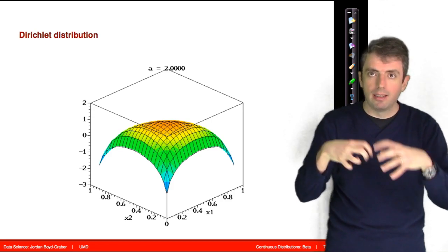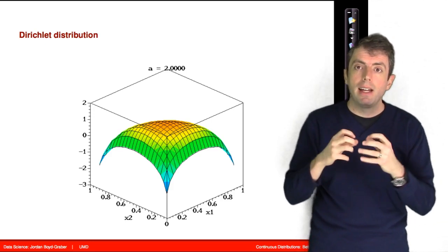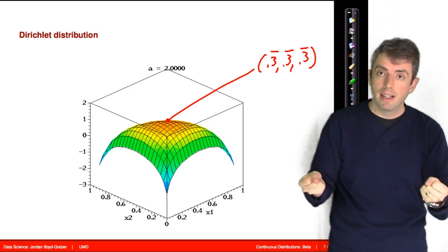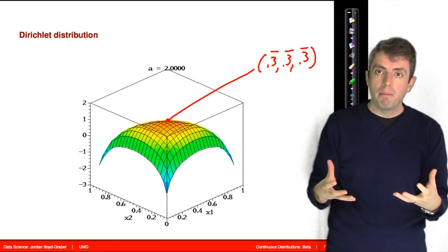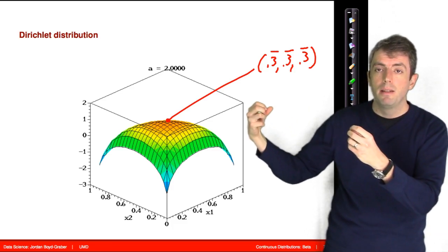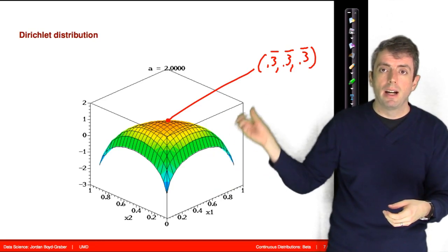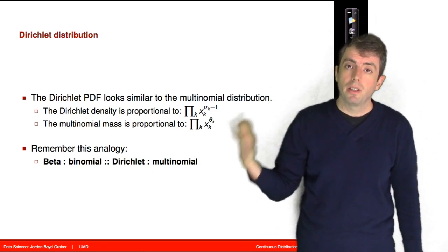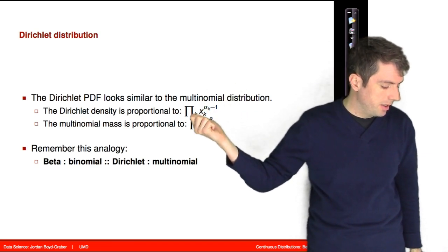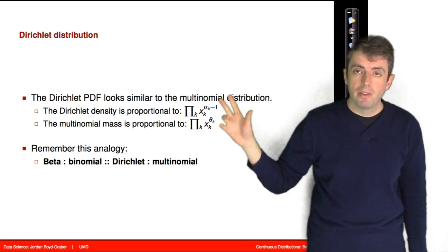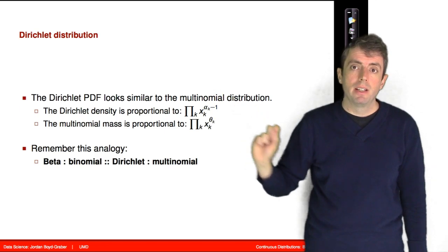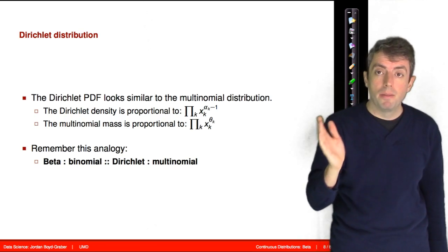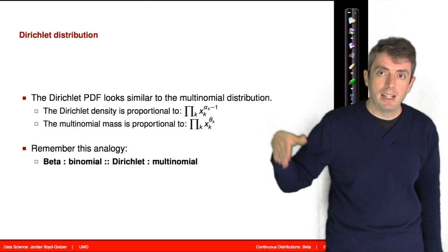If the parameter looks like that, the corresponding distribution bulges in the center, which corresponds to the probability distribution one-third, one-third, one-third. When all Dirichlet parameters are the same and greater than 1, the most likely outcome is going to be around the uniform distribution. Just as there is a connection between the beta and Bernoulli distributions, there's also a connection between the Dirichlet distribution and the multinomial distribution — they have a similar functional form. Remember the analogy: beta is to the binomial as Dirichlet is to the multinomial.